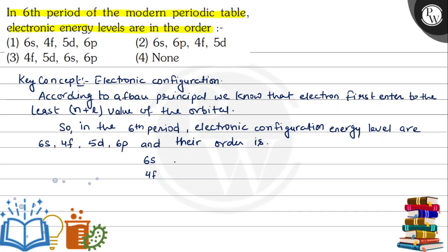We will check the n plus l values. For 6s: n is 6, l is 0, so n plus l equals 6. For 4f: n is 4, l is 3, so n plus l equals 7. For 5d: n is 5, l is 2, so n plus l equals 7. For 6p: n is 6, l is 1, so n plus l equals 7.